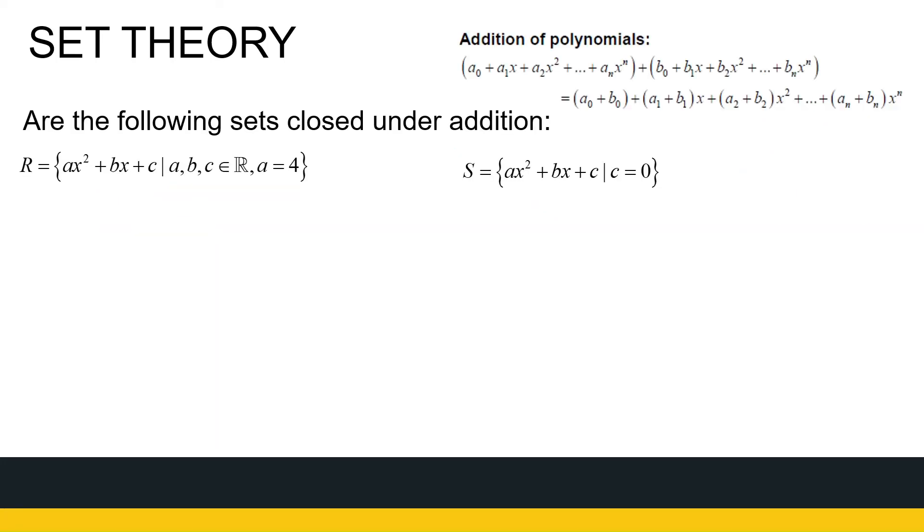All right, let's move on. Now we've got polynomials and a reminder at the top how to add polynomials together. So let's look at our first set. We've seen this R and S before when we looked at the section on set membership. Let's look at R. This first coefficient is 4 every time. So 4x² plus 2x minus 1, 4x² plus 5. Those are all elements of R.